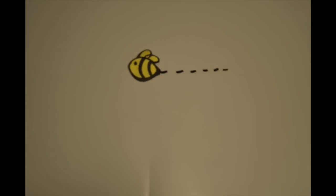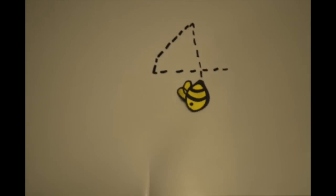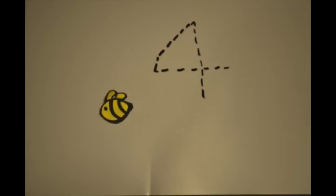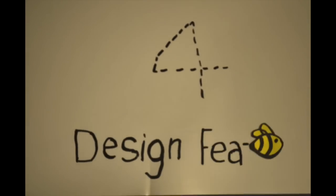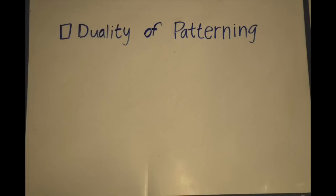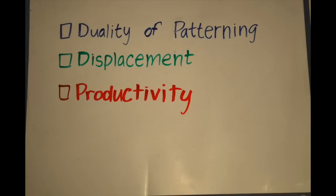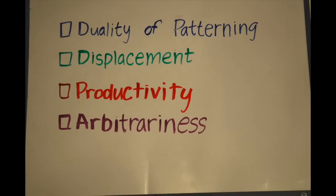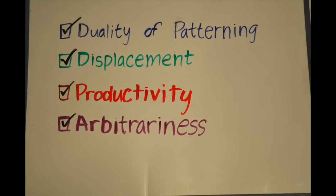So how do we decide if a form of communication is a language or not? Well, we can say that language is defined by four distinct design features, which are duality of patterning, displacement, productivity, and arbitrariness. Any human language is able to fully satisfy these criteria.